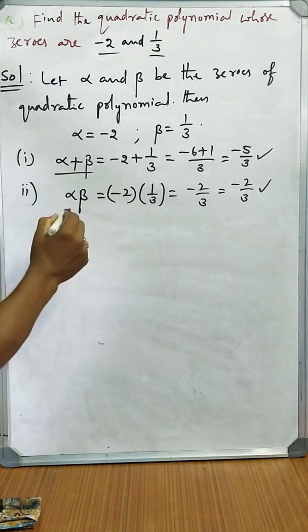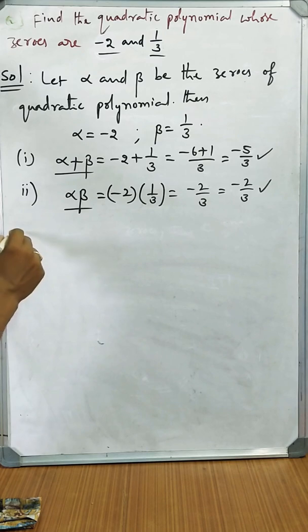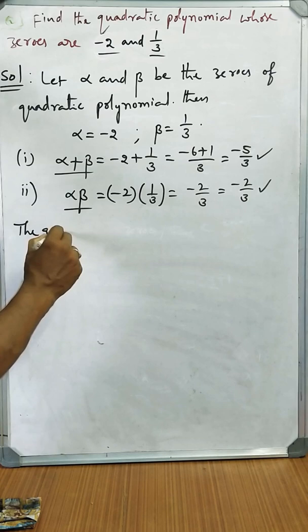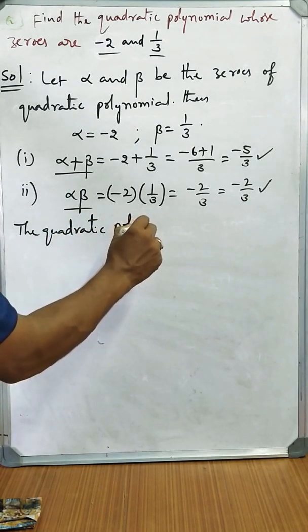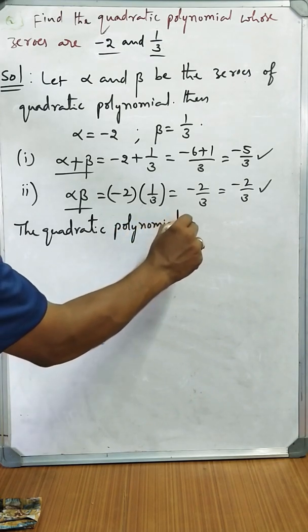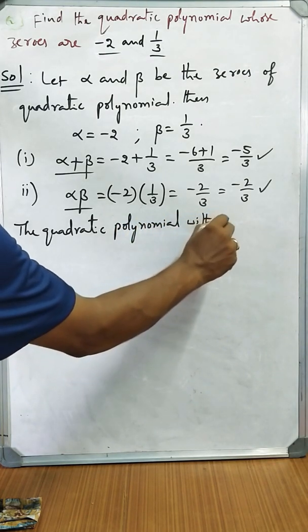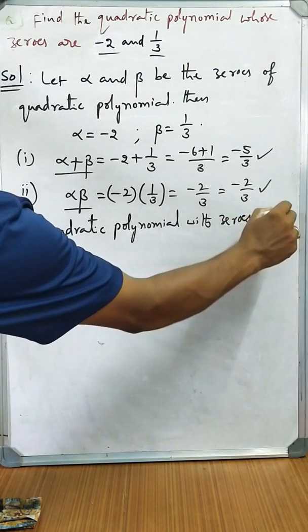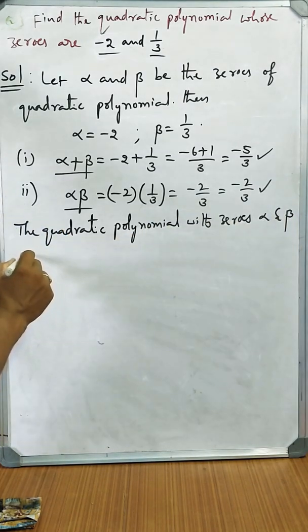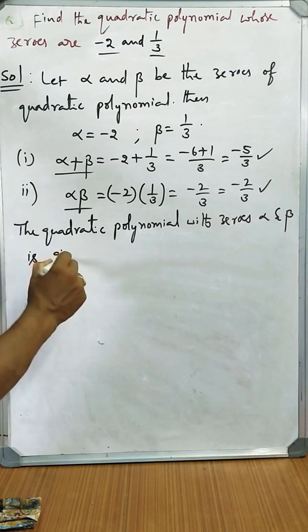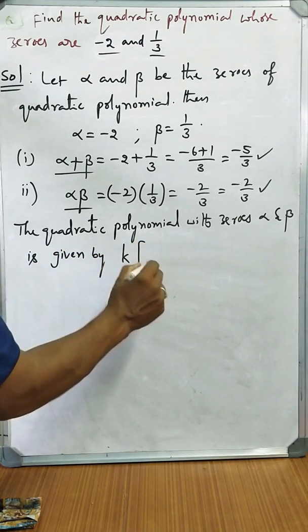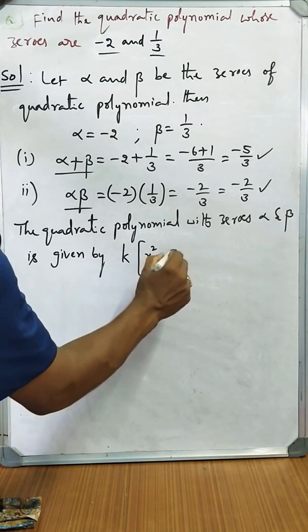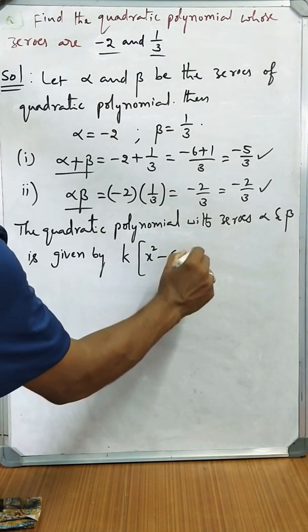After getting sum of the zeros and product of the zeros we have to take the formula. The quadratic polynomial with zeros alpha and beta is given by k times [x² - (α+β)x + αβ].